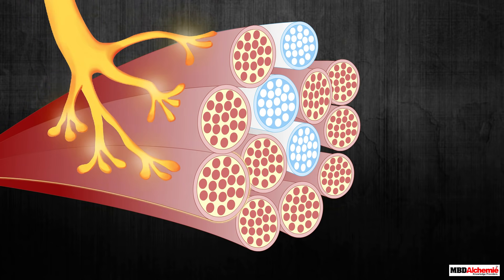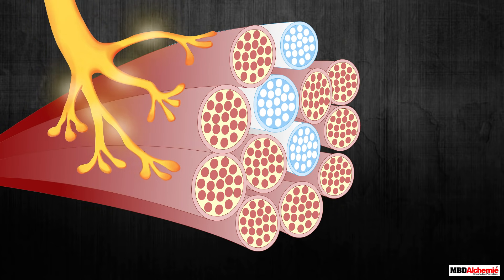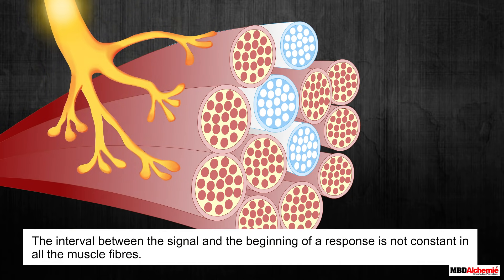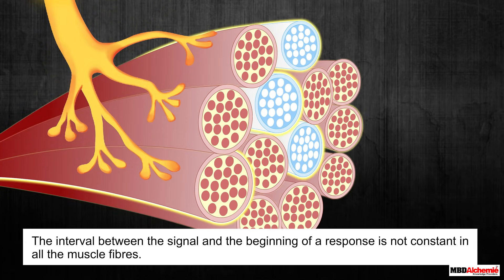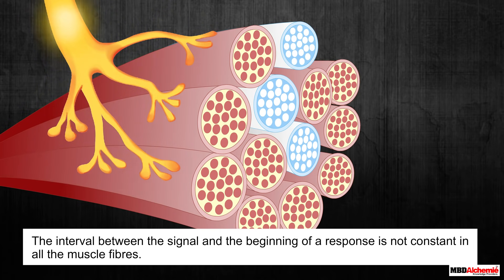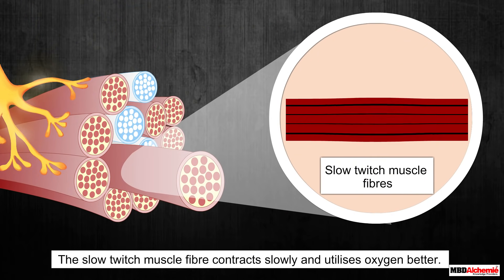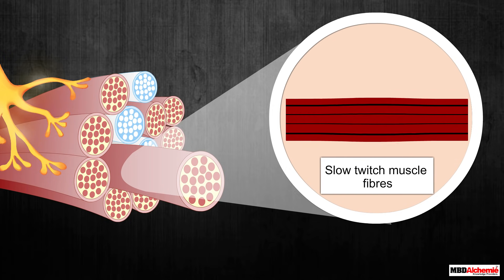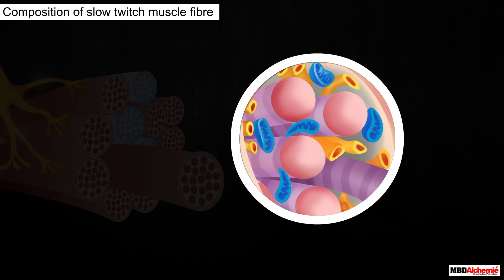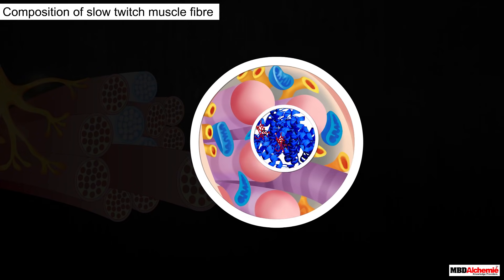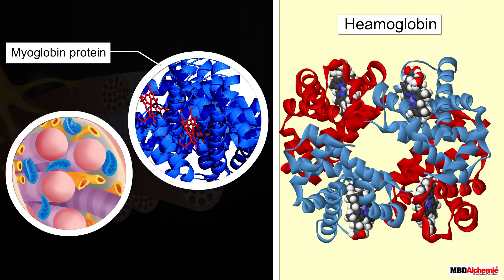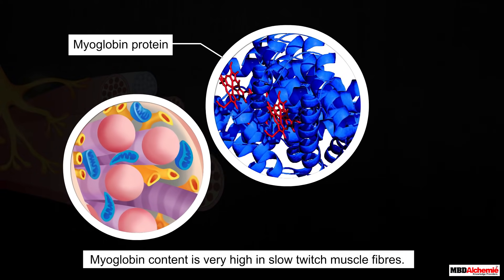Not all muscle fibers respond to a signal in the same interval of time — the reaction time is not constant across all muscle fibers. Slow twitch muscle fibers contract slowly and utilize oxygen better. What makes them slow is their components: first is the myoglobin protein, an iron-oxygen binding protein found in muscle fibers, similar to hemoglobin in red blood cells.